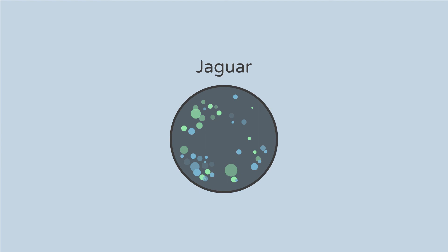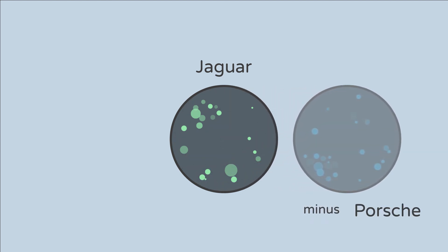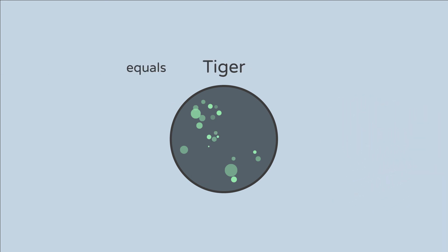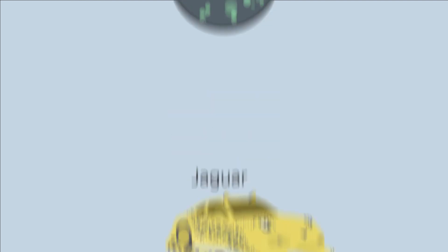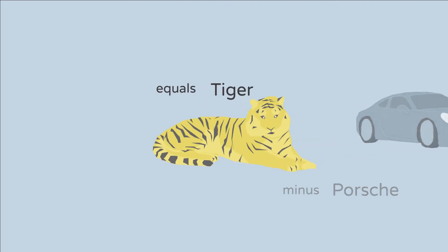Take the fingerprint of the word Jaguar. Remove the sports car context, represented by the fingerprint of Porsche. What do you get? A fingerprint which is strikingly similar to Tiger, or other big cats like Pumas, Panthers and Cougars. In short: Jaguar minus Porsche equals Tiger.